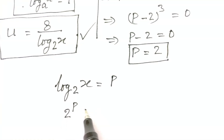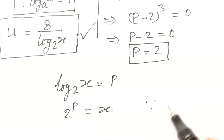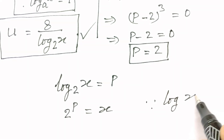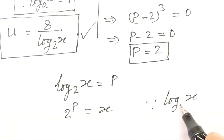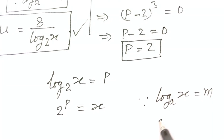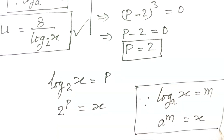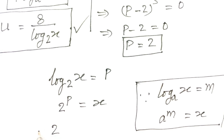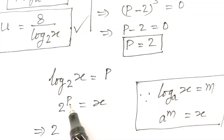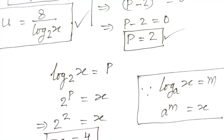So 2 to the power p will be equal to x, because if log of x base a equals m, then a to the power m equals x. Now, 2 to the power p, where p is 2, is equal to x. So x is equal to 4.